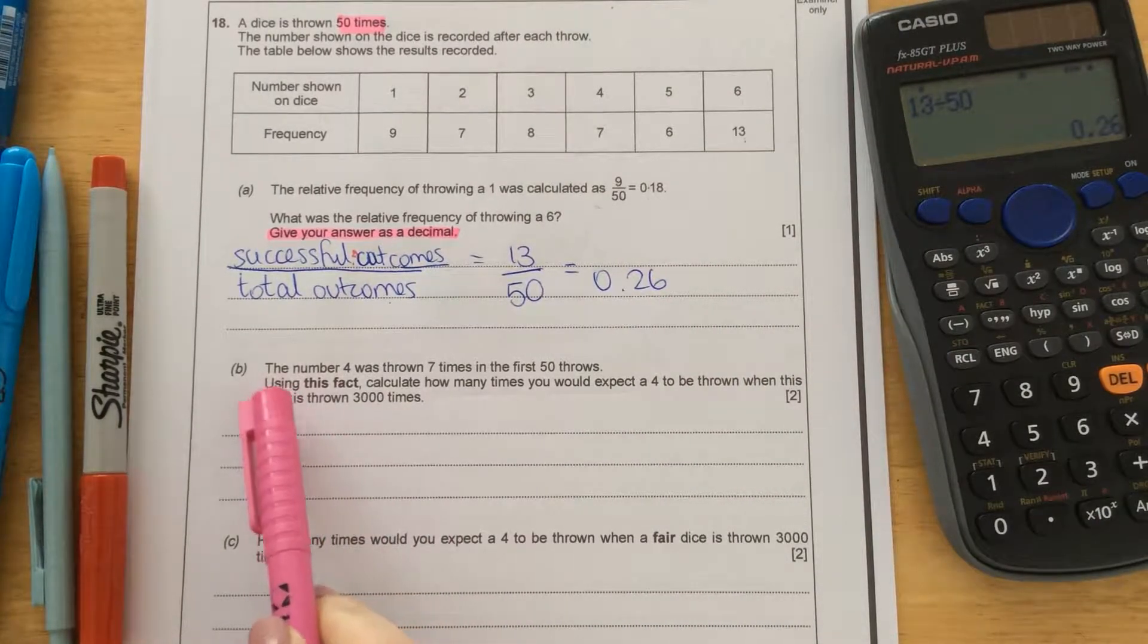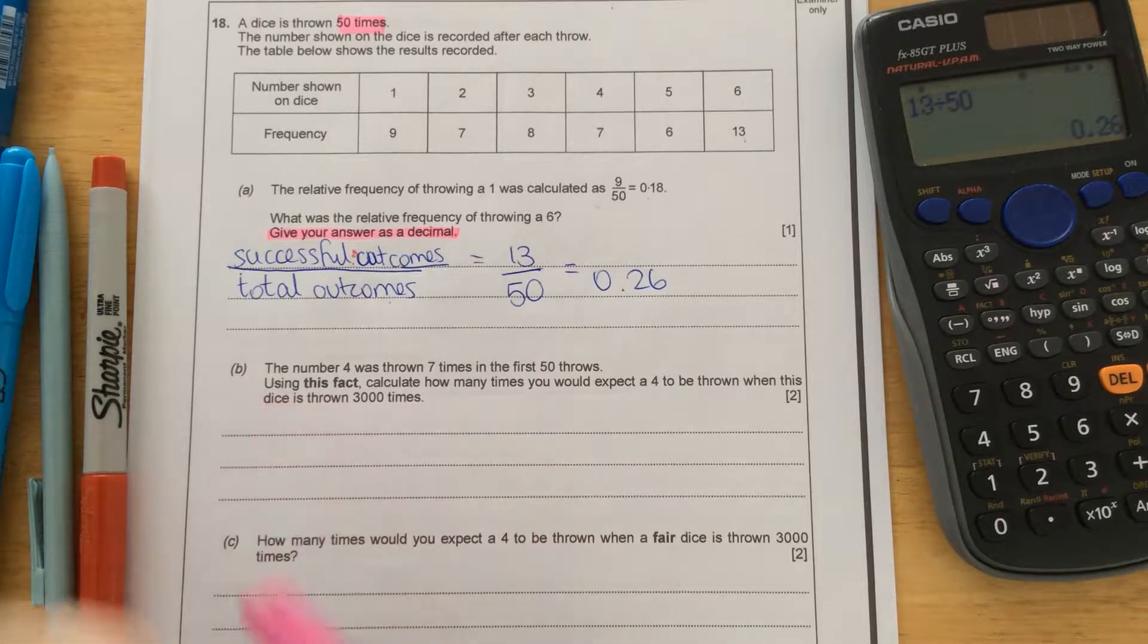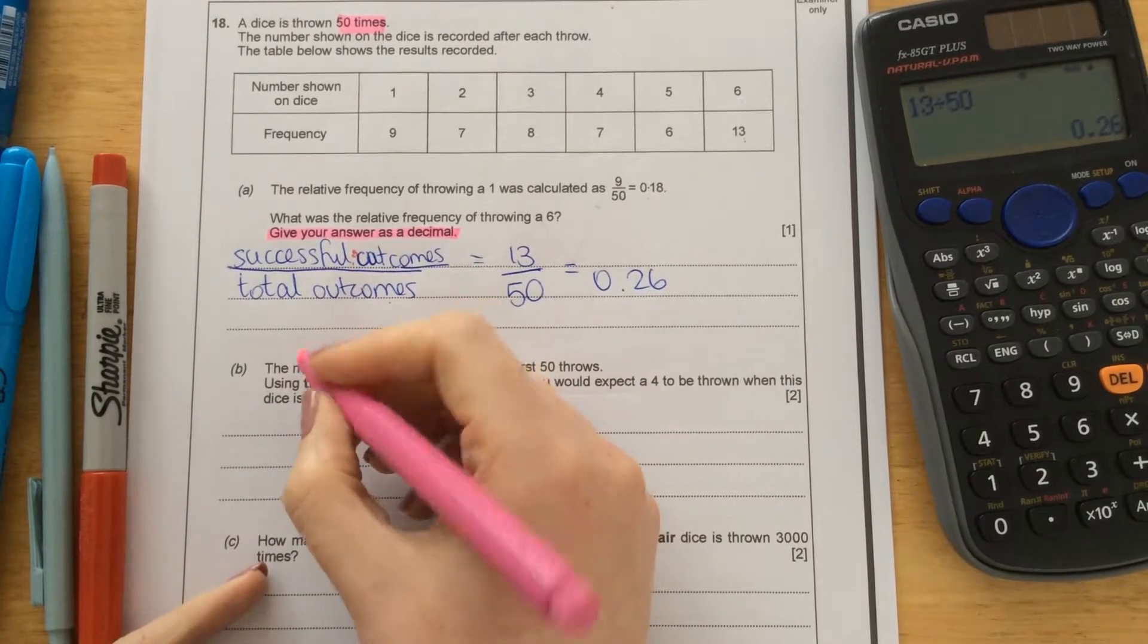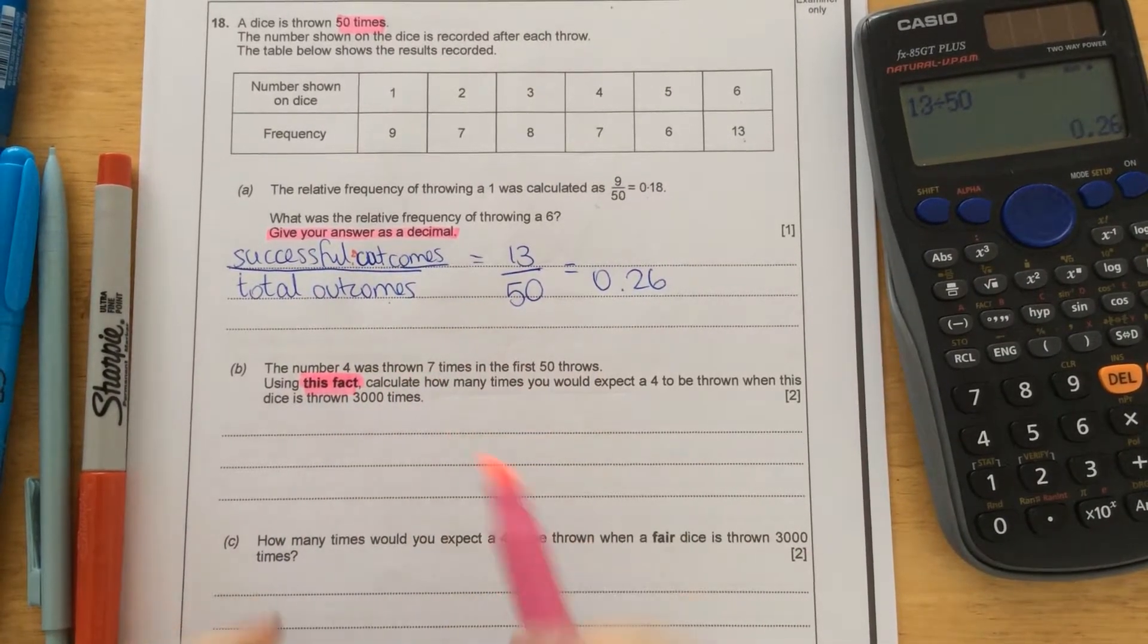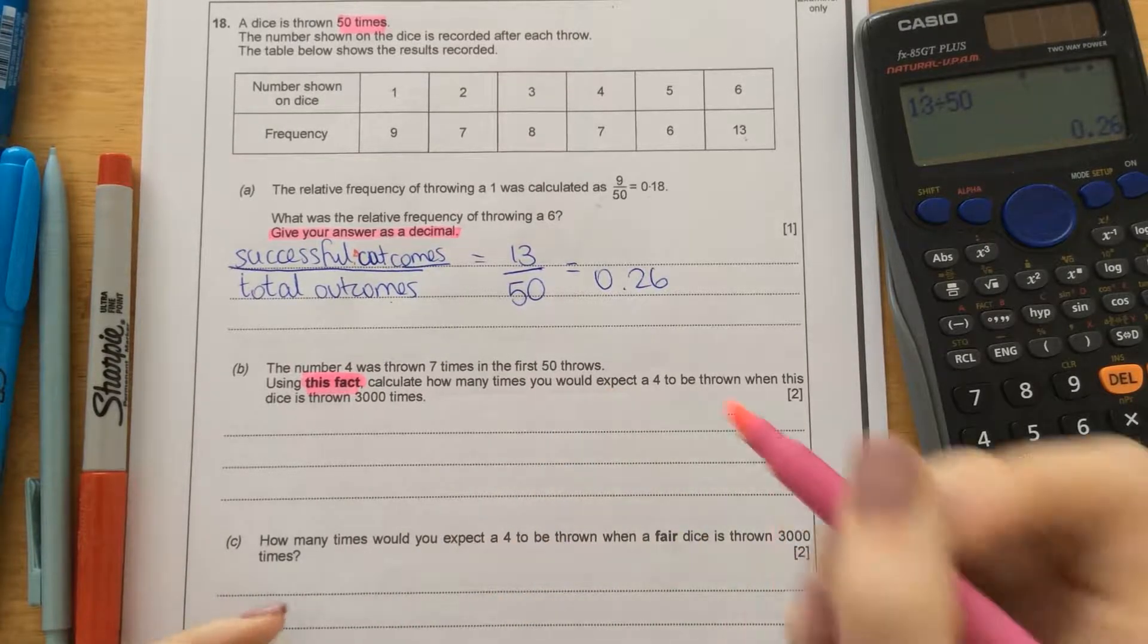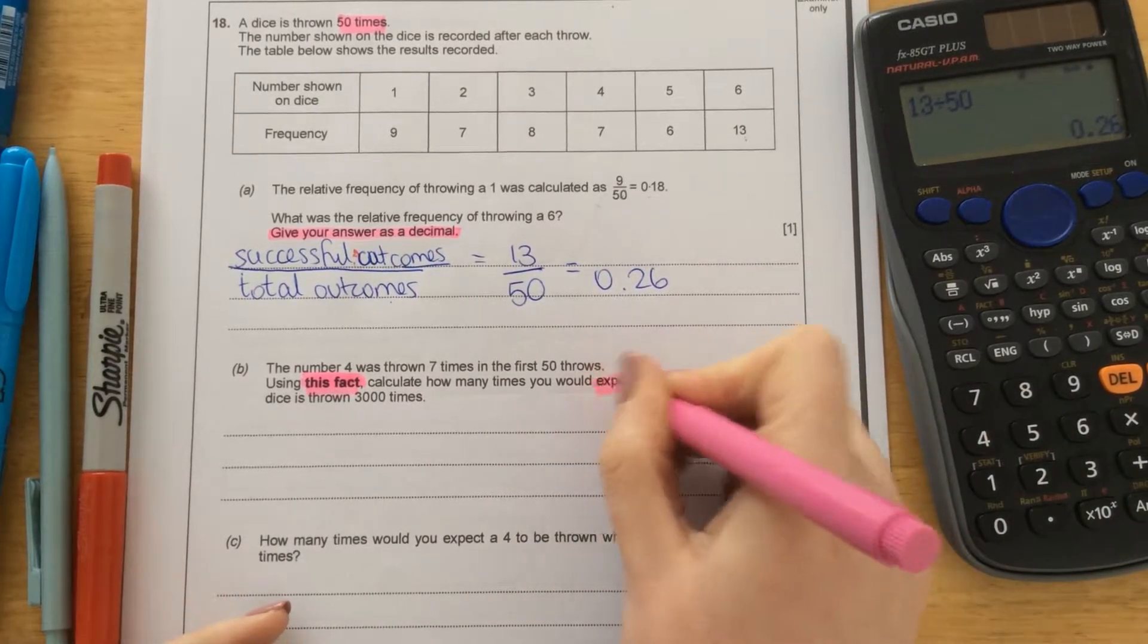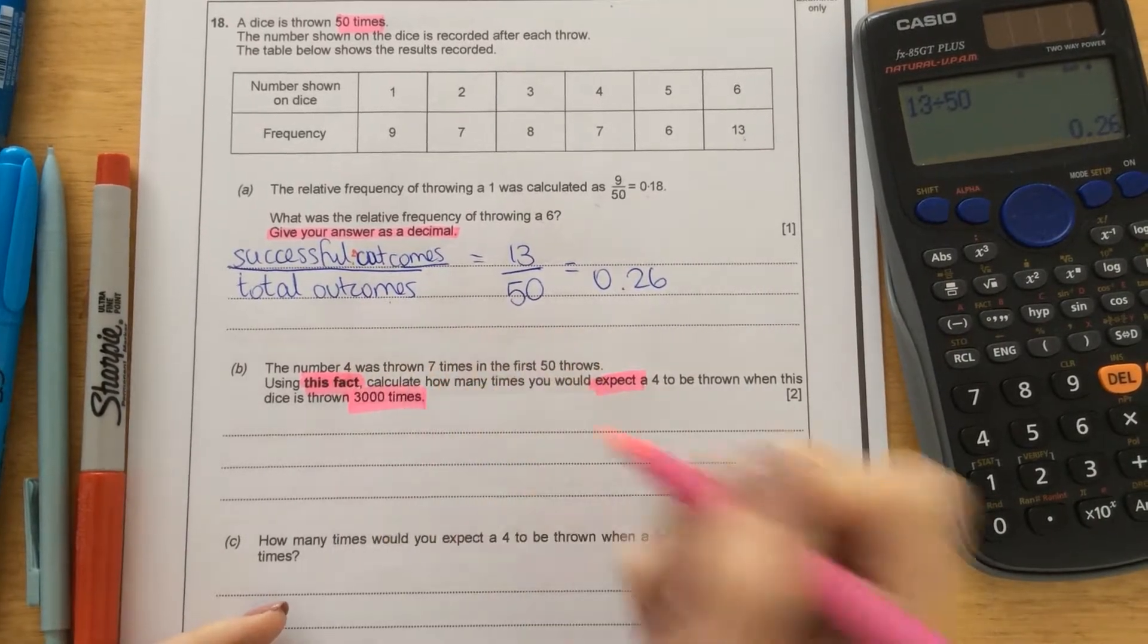So part B, the number 4 was thrown 7 times in the first 50 throws. Using this fact, that's in bold there, that's quite important. Using this fact, that the 4 was thrown 7 times, calculate how many times you would expect a 4 to be thrown when the dice is thrown 3,000 times.